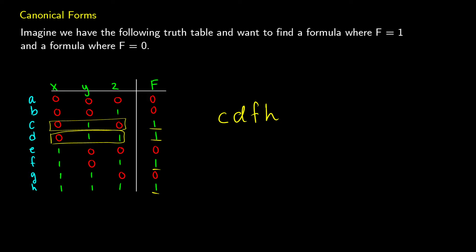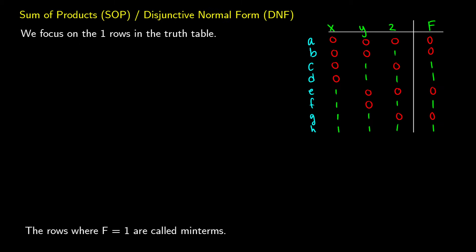I want to go over each of these methods as a step-by-step guide. First we'll talk about sum of products, also known as disjunctive normal form. This means we have something like c, and it's a sum of products — we sum one product, sum the other, and so on.